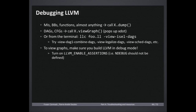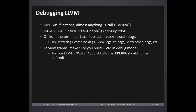Beyond printf-style debugging, you'll want to open a debugger. LLVM provides a dump() method on most objects you'll work with — instructions, basic blocks, and functions — which prints out the object's representation. For graph objects like DAGs and CFGs, calling viewGraph will pop up a window using X dot where you can zoom in and out and inspect nodes and their interactions. You can also pass flags like -view-dag-combine1 to the compiler from the command line to output DAGs at a specific stage in the pipeline. Note that LLVM must be built in debug mode for this graph functionality to be available.